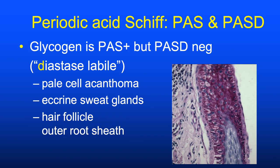There are two variants of the PAS stain: PAS and PASD. The last step in PASD is a diastase—an enzyme that removes glycogen from the cytoplasm of epithelial cells. You can demonstrate cytoplasmic glycogen by comparing both stains: glycogen is highlighted on PAS but removed on PASD.